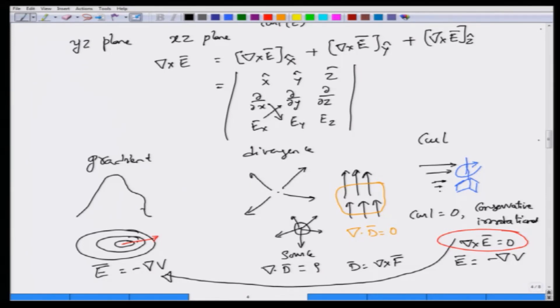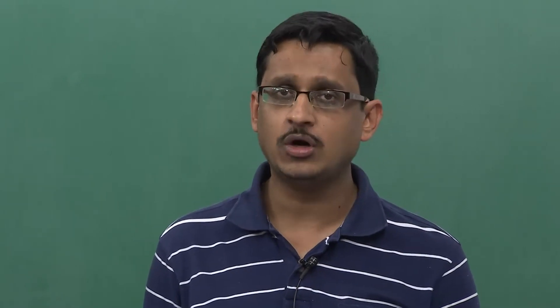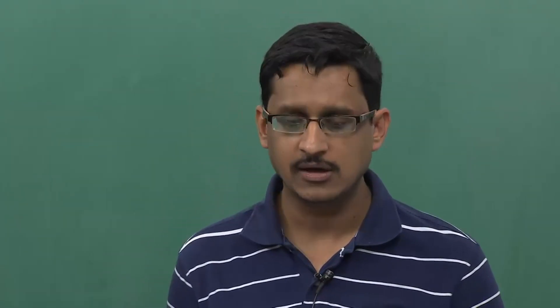I hope that the physical meanings of gradient, divergence, and curl are clear. Gradient tells you the directional dependence of the slope of a function in three dimensions — and gradient is related to the electric field because minus gradient of V is the electric field. The minus sign is only for our reference: as we go against the field, the potential would rise. Divergence: when the divergence is non-zero, it means there are charges in that region of space acting as the source or sink of electric flux lines.